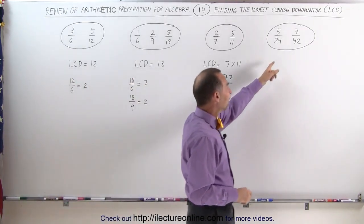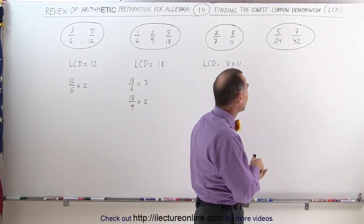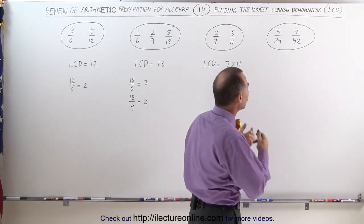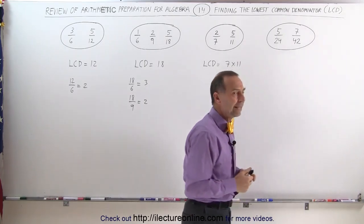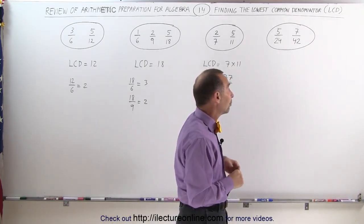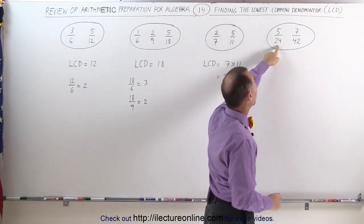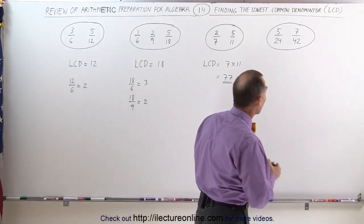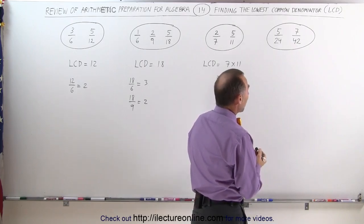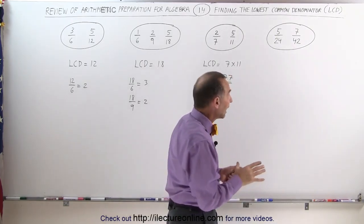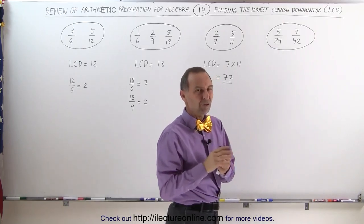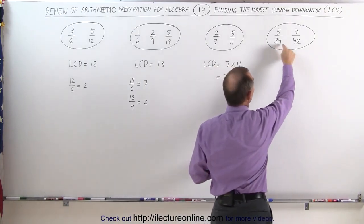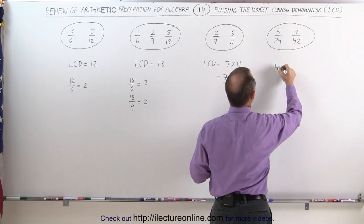When you come to something like denominators 24 and 42, I really would not want to multiply those two numbers together as my common denominator, because that's a really big number. I'm hoping there's a smaller number than simply their product. First, you want to check that the smaller number does not fit evenly into the larger one — and 24 does not fit evenly into 42 — so 42 is not the LCD. To find the lowest common denominator, you're going to write each denominator as a product of prime numbers.